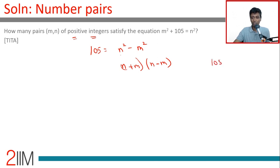105 can be written as 3 into 35, 3 into 5 into 7, and so that's eight factors. It can be broken up in four different ways, so it can be written as 1 into 105, 3 into 35, 5 into 21,